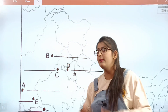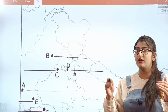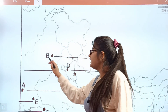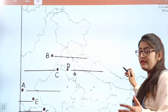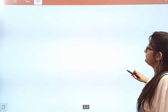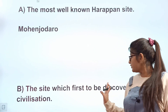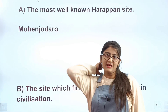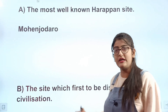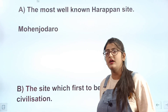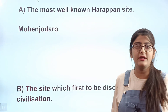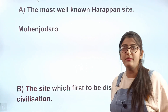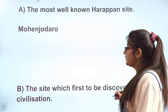Let me check the map. You should also revise the map two to three times to understand the locations. The question for B is: which site was the first to be discovered in the Harappan civilization? For this question the answer is clearly Harappa, and B is marked at that location.